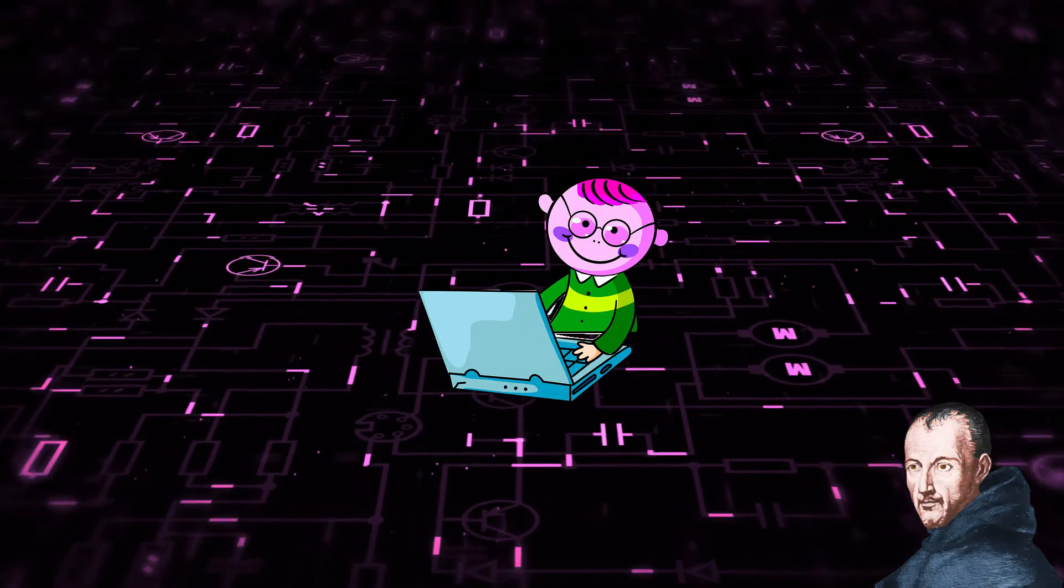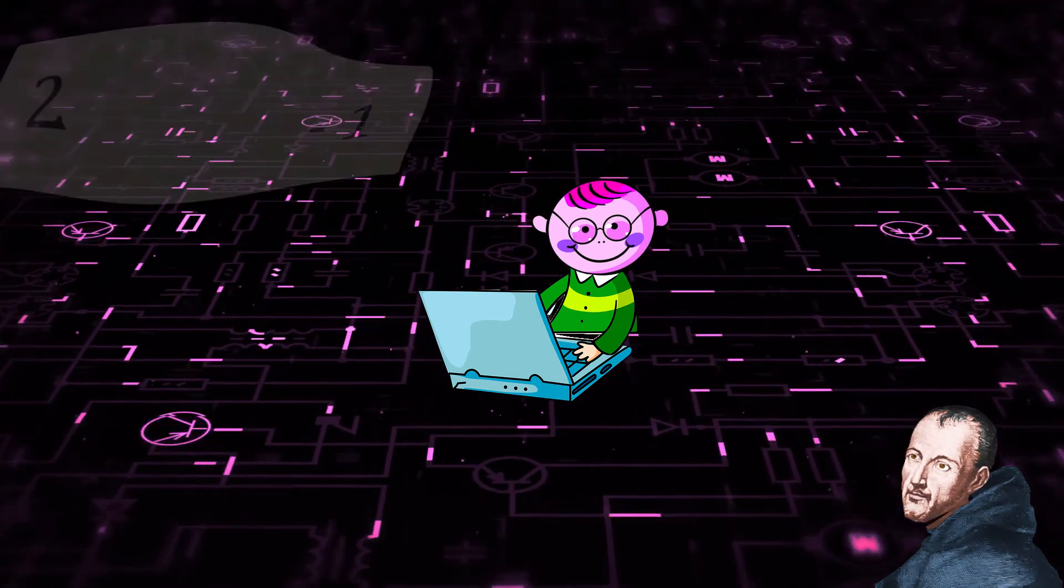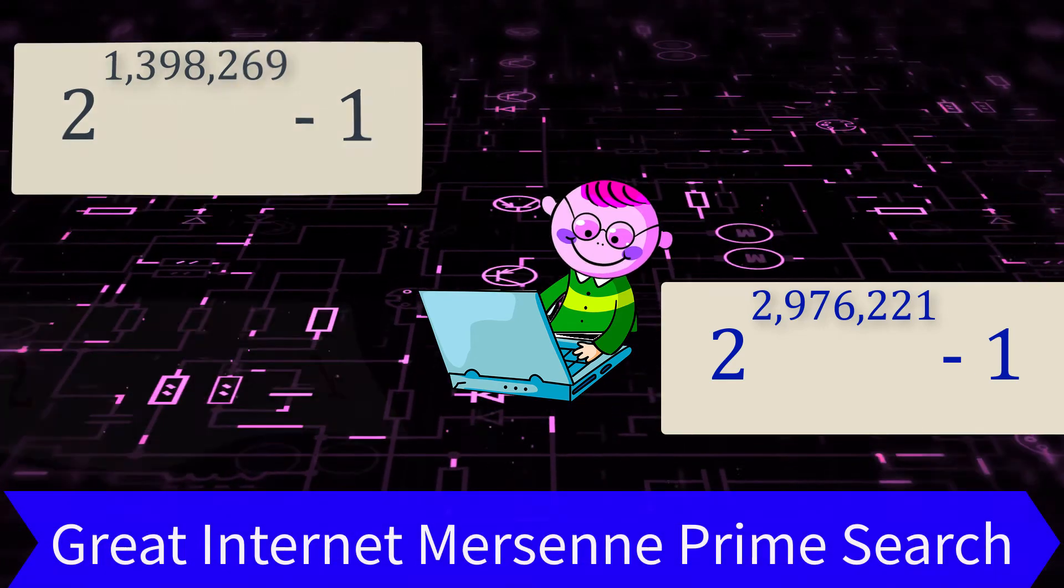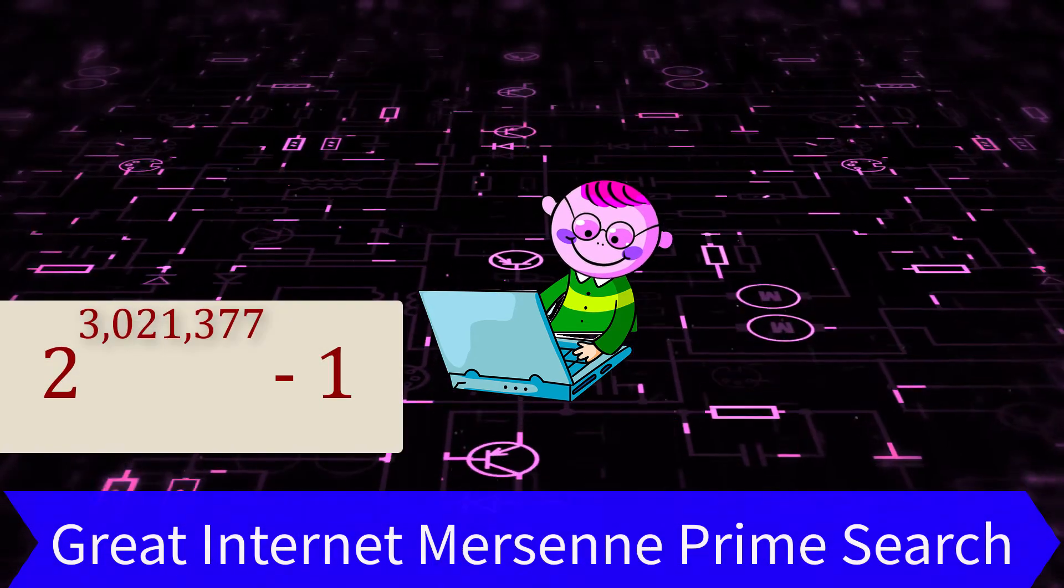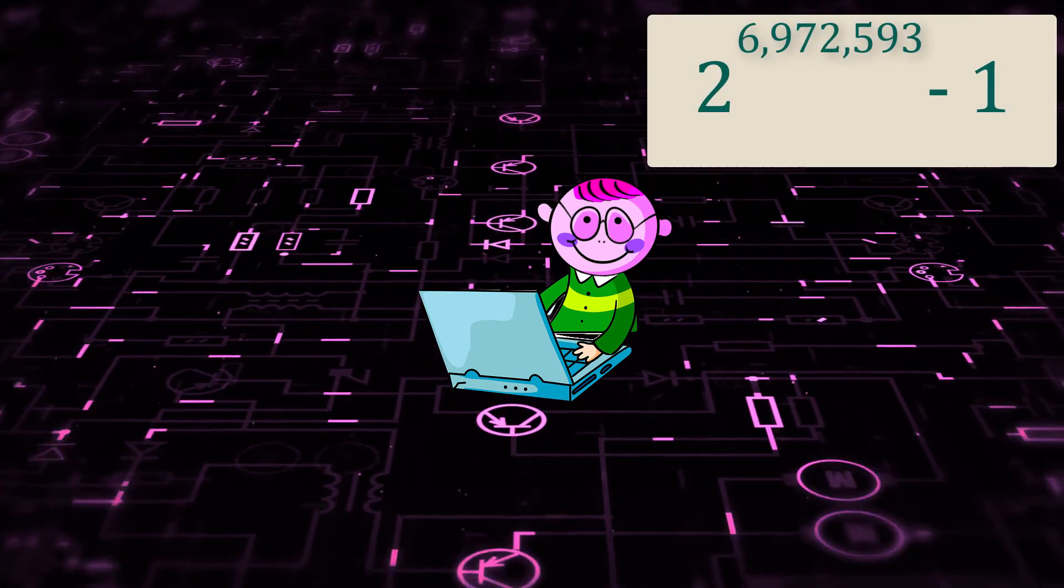Since 1996, the whopping computer power needed to find Mersenne primes has been provided by the Great Internet Mersenne Prime Search, or GIMPS. I've included the link below if you want to help. So far, the search has discovered the 17 largest known Mersennes.